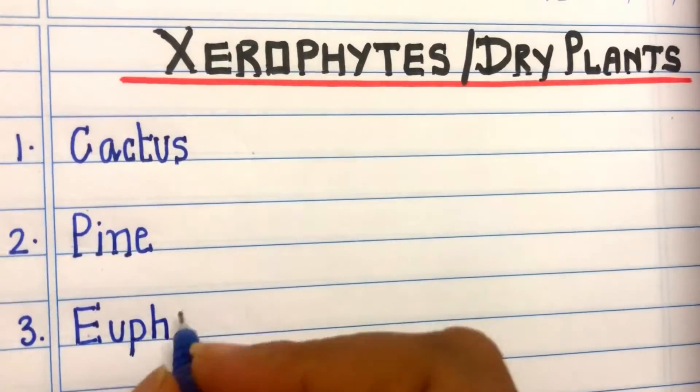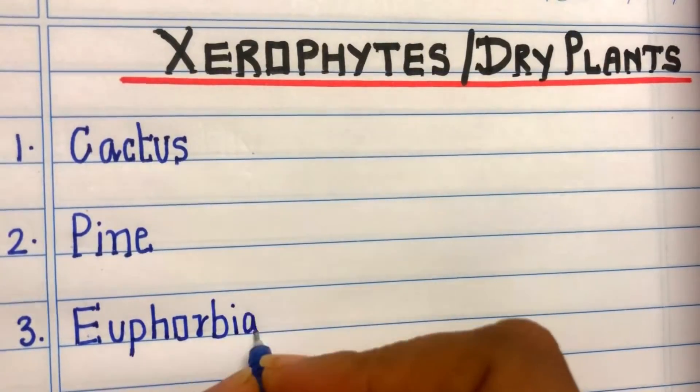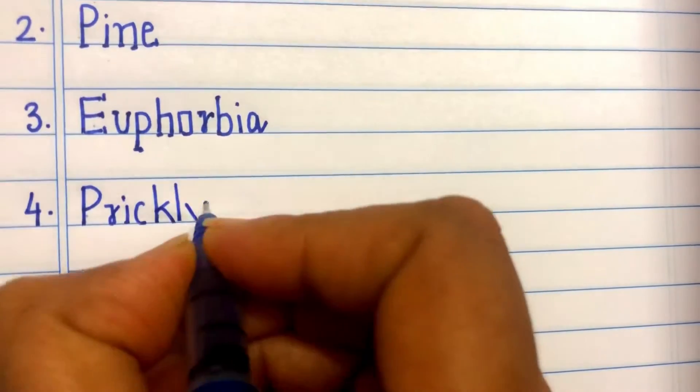Euphorbia, E-U-P-H-O-R-B-I-A, Euphorbia. Fourth one: Prickly pear, P-R-I-C-K-L-Y, Prickly, P-E-A-R.